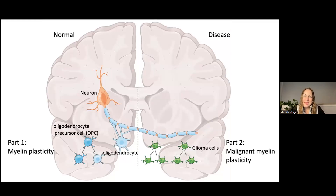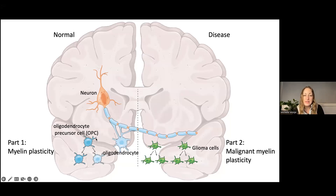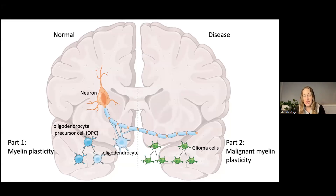Broadly speaking, my laboratory seeks to understand the molecular language that cells use as they work together to build and to remodel the brain, and how those interactions interface with the immune system. I want to tell you one story today in two parts: how neurons interact with the glial cells that form the myelin sheath during development, and in an ongoing modulatable way throughout life, how adaptive and experience-dependent changes in the myelinated infrastructure contribute to cognition and various neurological and neuropsychiatric functions.